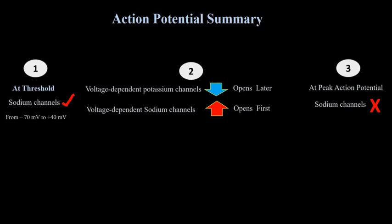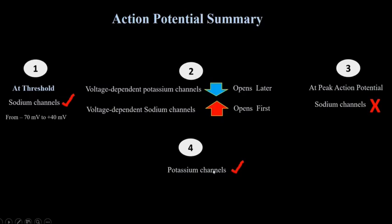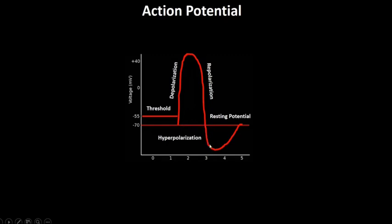At this time, no more sodium ions can enter the cell. When the sodium channels become blocked, the voltage-dependent potassium channels in the membrane open, permitting potassium ions to move freely through the membrane. At this time, the inside of the axon is positively charged, so potassium ions are driven out of the cell by both diffusion and electrostatic pressure. This outflow of cations causes the membrane potential to return towards its normal value, and as it does so, the potassium channels begin to close again. Once the membrane potential returns to normal, the sodium channels reset so that another depolarization can cause them to open again.